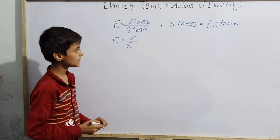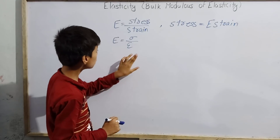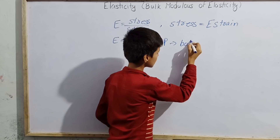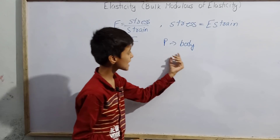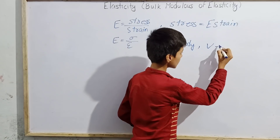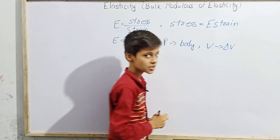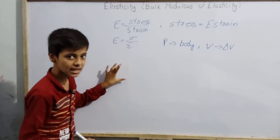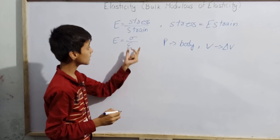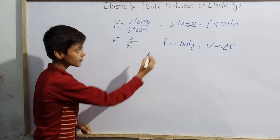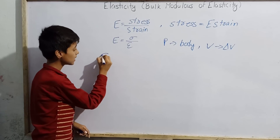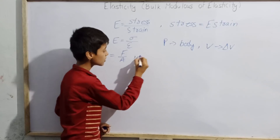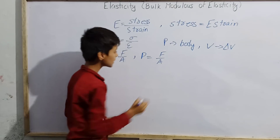E equals sigma by epsilon — so much we have. Now let us imagine a case where any pressure is acting on a body, and due to this pressure the volume of that body V changes by delta V. Now, can stress sigma and pressure be equal? Sigma means F divided by A — force per unit area.